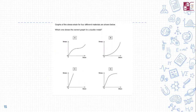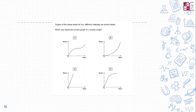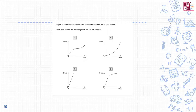Question 4: The graphs of stress versus strain for four different materials are shown. Which one shows the correct graph for a ductile material? The correct option is D, as ductile metals are able to take a lot of strain. A brittle material would break sooner, but since ductile metals can sustain large strain, option D is correct.